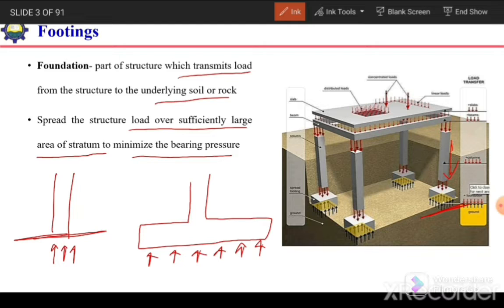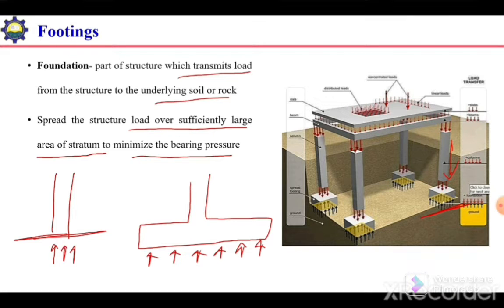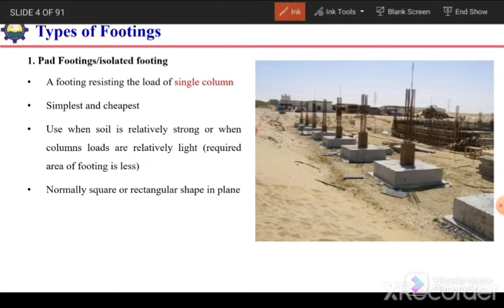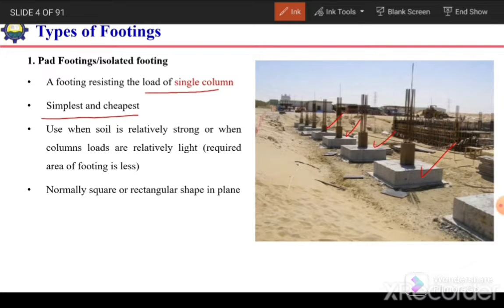As a result, our soil will be safe and our structure will also be safe. The first type is pad footing or isolated footing. These are footings which resist the load of a single column — every column has a separate foundation. This type of footing is termed a pad or isolated footing. It is the cheapest and simplest footing, used when soil is relatively strong or when column loads are relatively light, so the required area of footing is less.